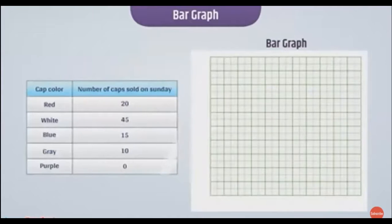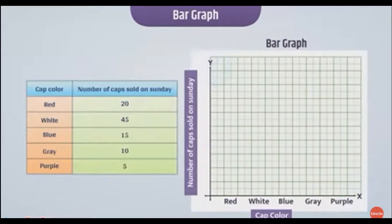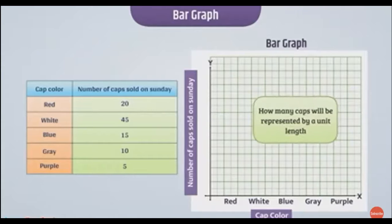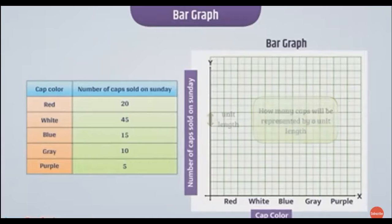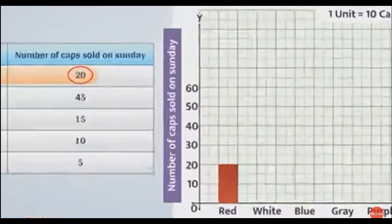Let's represent the following data using bar graph. To represent data graphically, first draw a horizontal line and a vertical line. Then write categories such as red, white, blue, grey and purple on horizontal axis and number of caps sold on vertical axis. Choose appropriate scale, specifying how many caps will be represented by a unit length. Here we choose one unit equals 10 caps. Write the number of caps on the vertical axis accordingly. Now find the height of bars as per the data. For 20 red caps, draw a bar extending from 0 to 20, which is a bar of height 2 units.